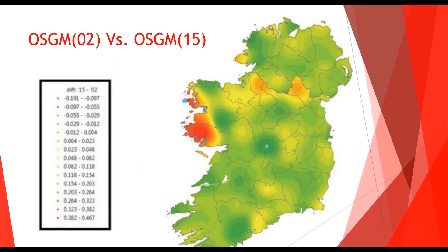So why did we move from ITM to ITM15? The grid is exactly the same; however, the difference is the geoid model. That's why if you're using a GPS and you change your coordinate reference system between ITM and ITM15, standing in the same location you would expect to get the same position within GPS accuracies — within 15 to 20 millimeters in position — however the elevations could change.